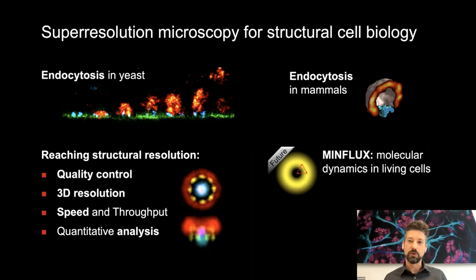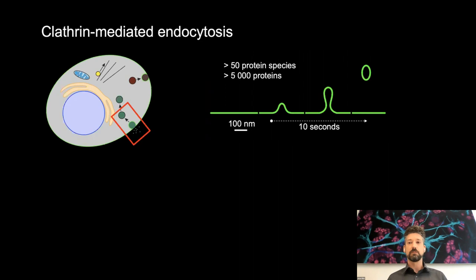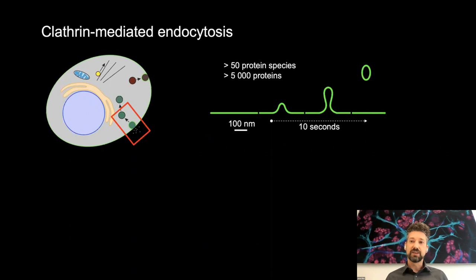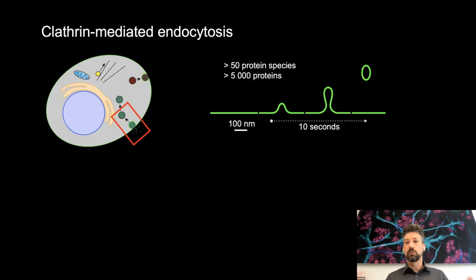Endocytosis is the mechanism by which cells take up molecules from the surface and environment — essentially how cells eat — and it's a very important process for any eukaryotic cell. Endocytosis is driven by a complex machinery in which more than 50 different proteins in many copies self-assemble, then within seconds pull in the membrane and pinch off a vesicle. It's been quite difficult to study because of this huge complexity, fast dynamics, and small size well below the resolution limit of optical microscopy.